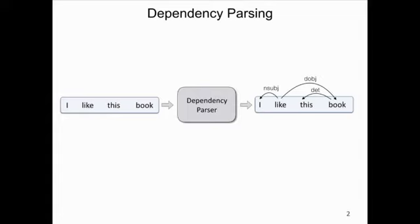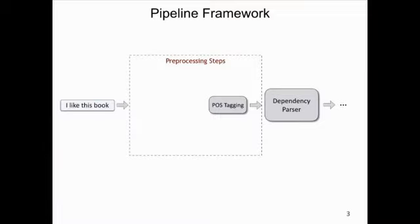The dependency parsing problem has been studied for more than 10 years. The goal of dependency parsing is to automatically extract dependency relations in a sentence — given a sentence, a parser will automatically generate a dependency tree. Usually we give the raw sentence to the parser; however, most parsers also rely on part-of-speech tags to generate useful features for parsing.